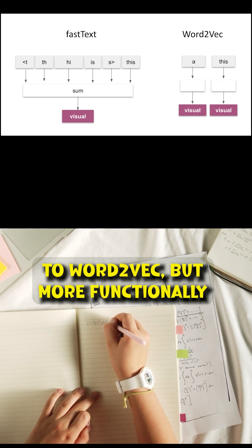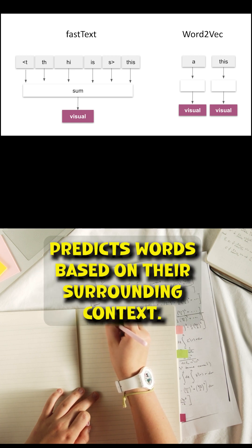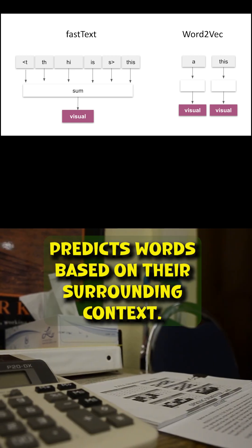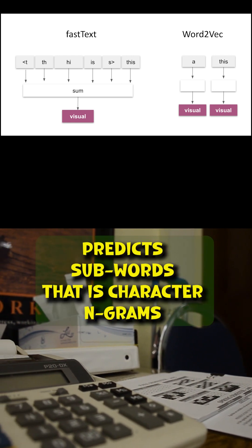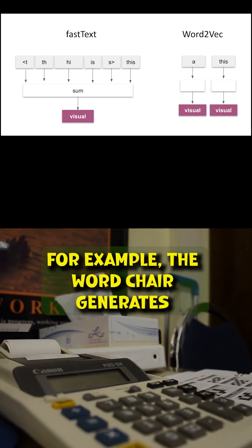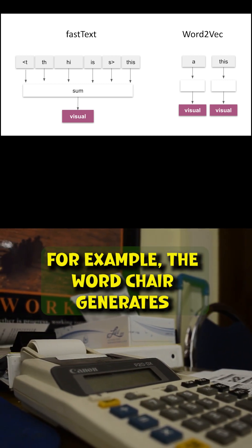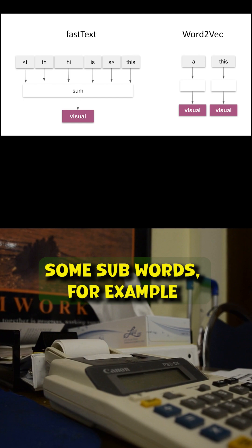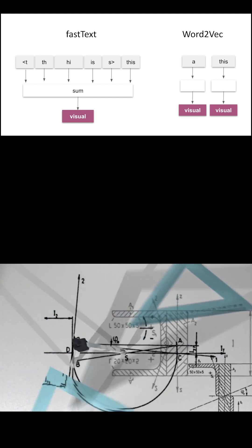but with more functionality. Word2Vec predicts words based on their surrounding context, while FastText predicts subwords, that is, character n-grams. For example, the word 'chair' generates subwords like ch, ha, ai, ir.